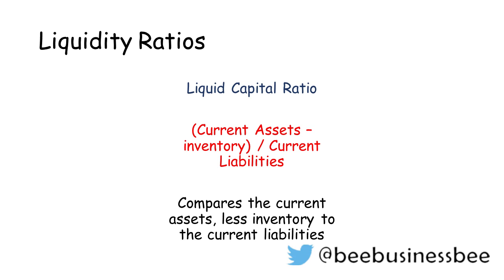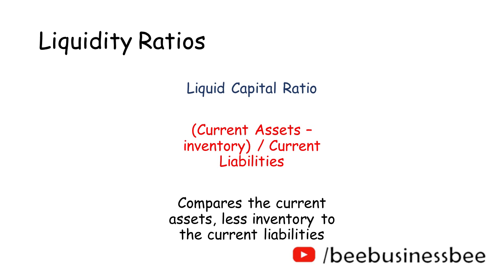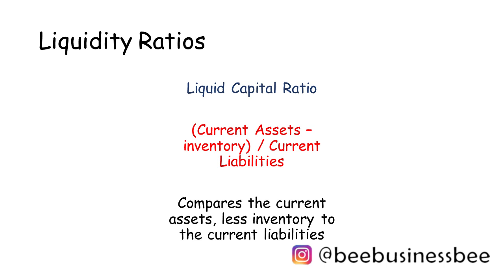In business, if you want to sell your stock quickly to turn it into cash, you may need to discount it, meaning you don't get the full value back. So some accountants prefer the liquid capital ratio because it focuses on the best current assets — cash and debtors, people who owe you money — but it doesn't count stock, because until it's sold it hasn't been turned into cash.